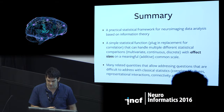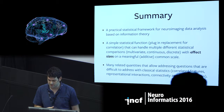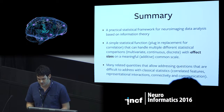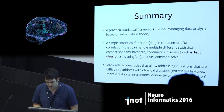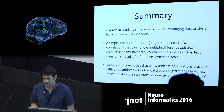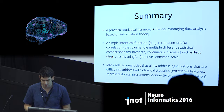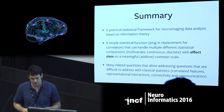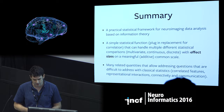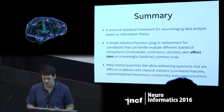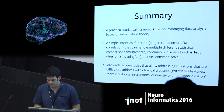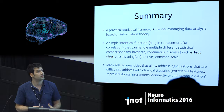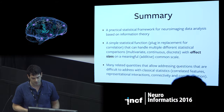The main thing I want to get across is that we have a practical statistical framework for neuroimaging data analysis based on information theory. It's a simple statistical function — a plug-in replacement for correlation — but crucially it can handle multiple different statistical comparisons, including this sort of intermediate multivariate, and continuous and discrete variables. And in all of these, it gives you effect sizes on a meaningful, actually additive, common scale.